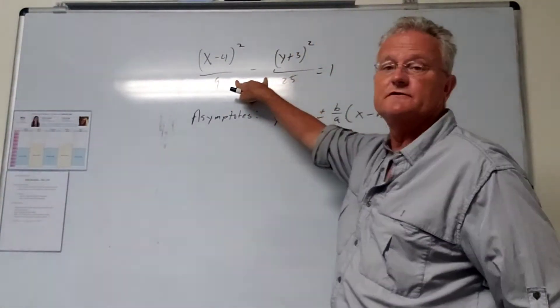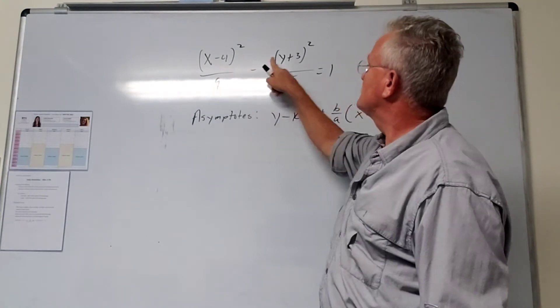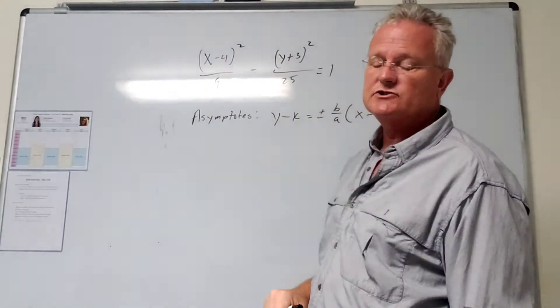So here we're asked to find the asymptotes of this hyperbola. Again, the x comes first, x squared minus - it's of the form x squared minus y squared.